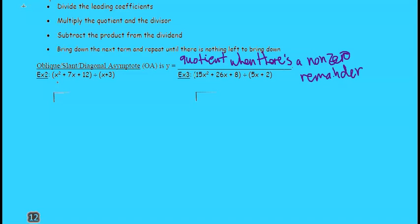Let's look at example two. x squared plus 7x plus 12 divided by x plus 3. So we're going to write this out. This number will go on the inside. So x squared plus 7x plus 12, that's the dividend expression. And then the divisor is x plus 3.